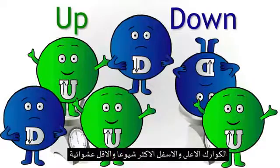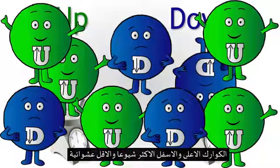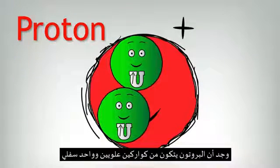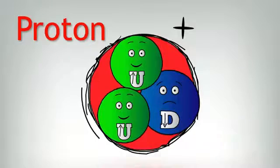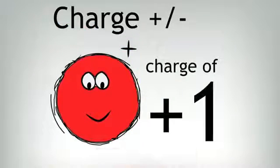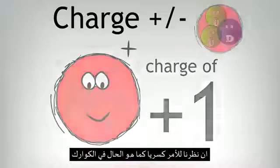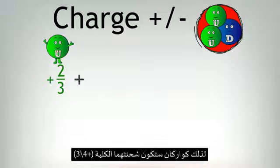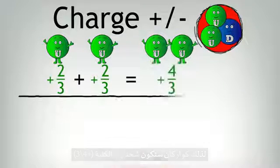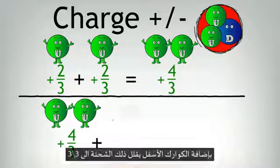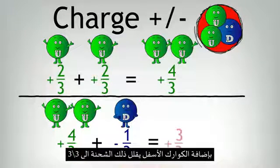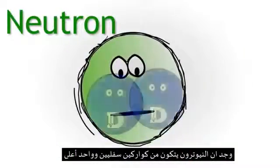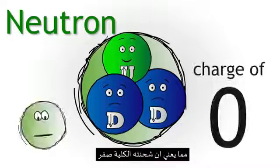The up and the down quarks are the most common and least massive. The proton was found to be made of two up quarks and one down quark. The charge of a proton is plus one. In terms of fractional charges, one up quark has a charge of plus two-thirds, so two up quarks have an overall charge of plus four-thirds. Adding a down quark reduces the overall charge to three-thirds, which is the equivalent of one. A neutron consists of two down quarks and one up quark, giving it an overall charge of zero.